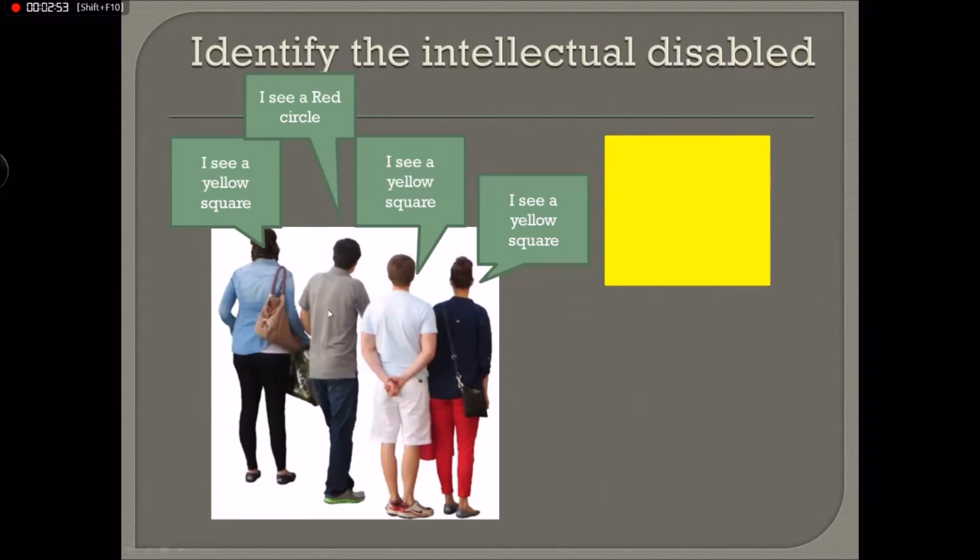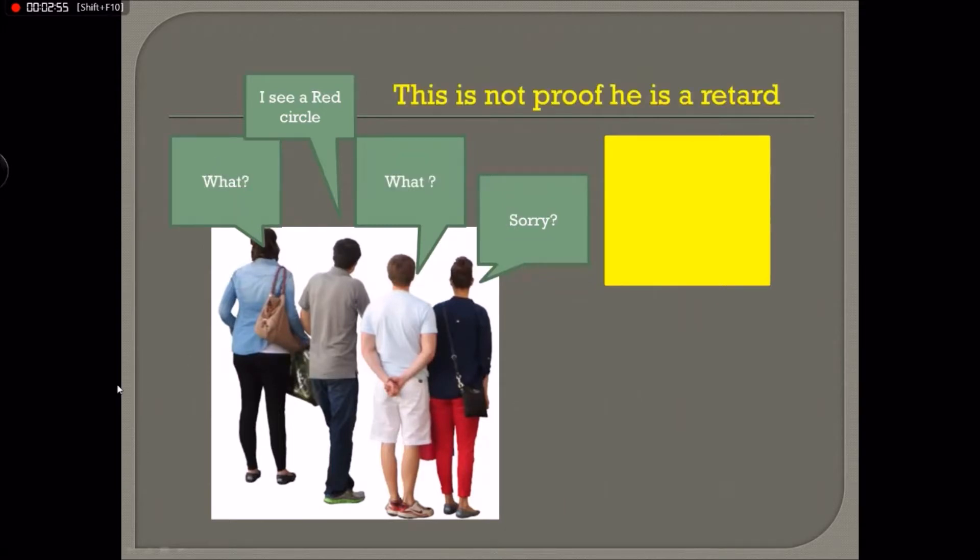So I think this is not yet proof of a retard. And you can say, why what? Sorry. Because the guy says I see a red circle, but you have not identified what that guy understands as the color red or as a circle. And without doing that, you can't call him a retard yet. Now, maybe it's a part of his language that the thing happens to be called a red circle. So we have to check certain things first.